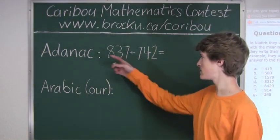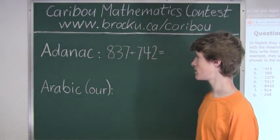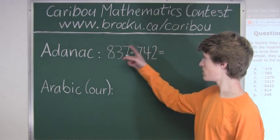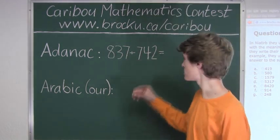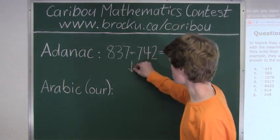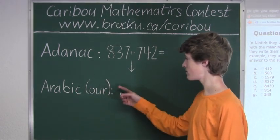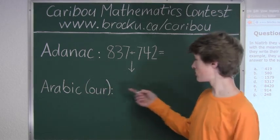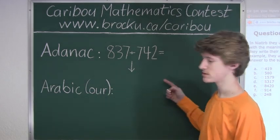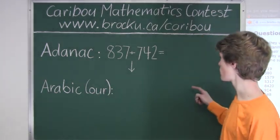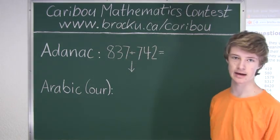Since we don't know how to add in Adenac numbers, we will convert each Adenac digit into our Arabic digits. Then we add up those two numbers, and then the result will be finally converted back into Adenac numbers.